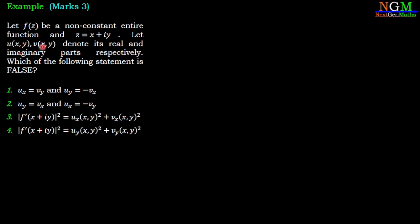The question is: let f be a non-constant entire function and z equal to x plus iy. Let u(x,y) and v(x,y) denote its real and imaginary parts respectively. Which of the following statement is false? So here we have to find the false statement from the given four statements.